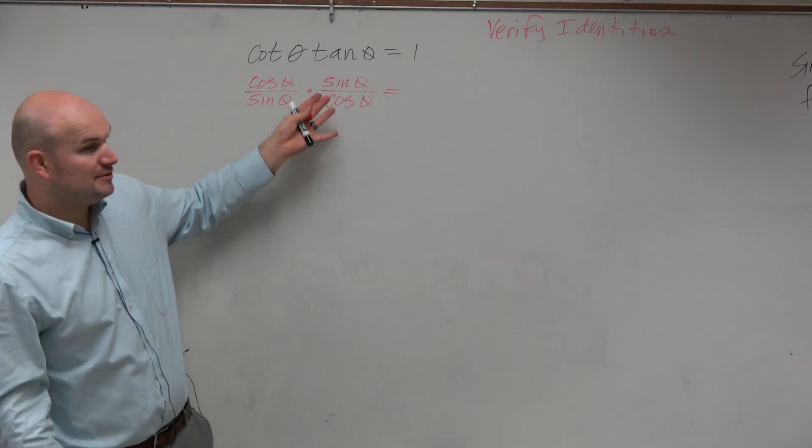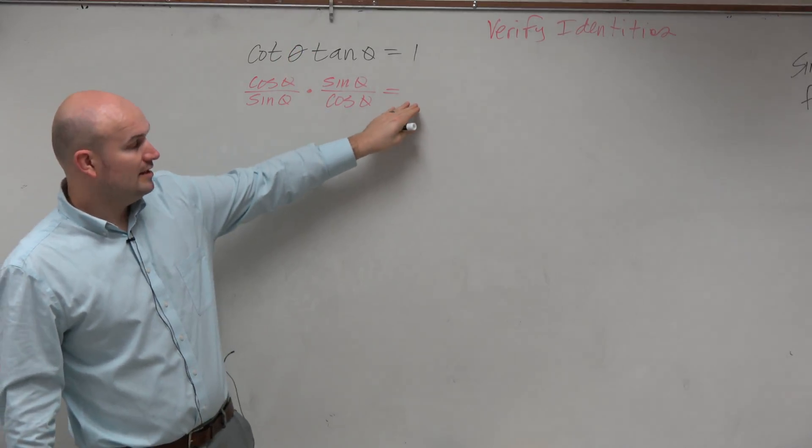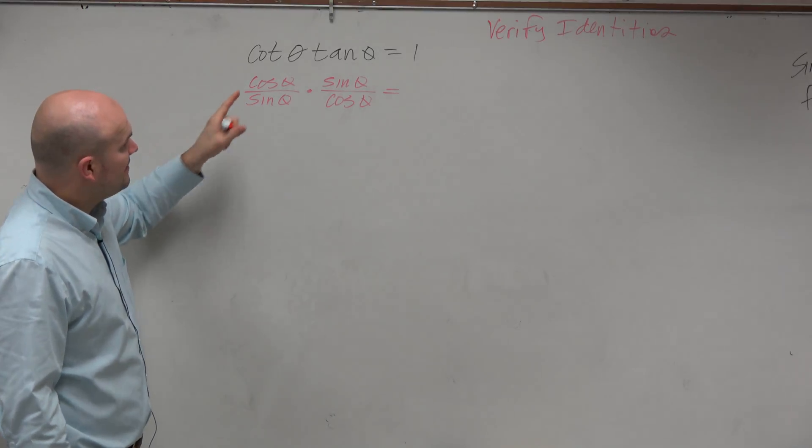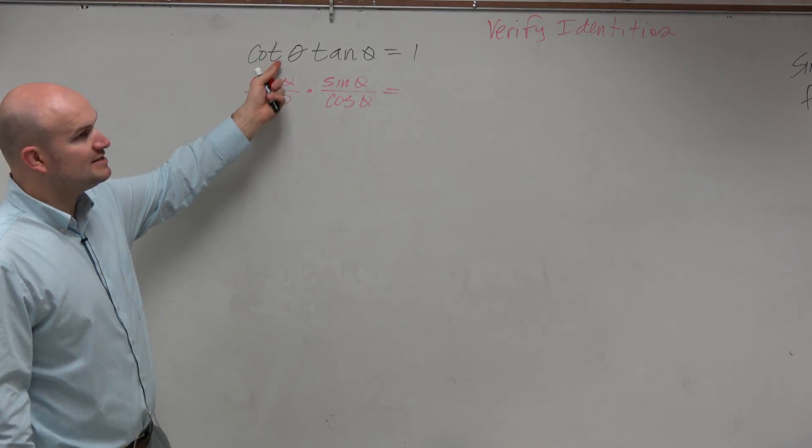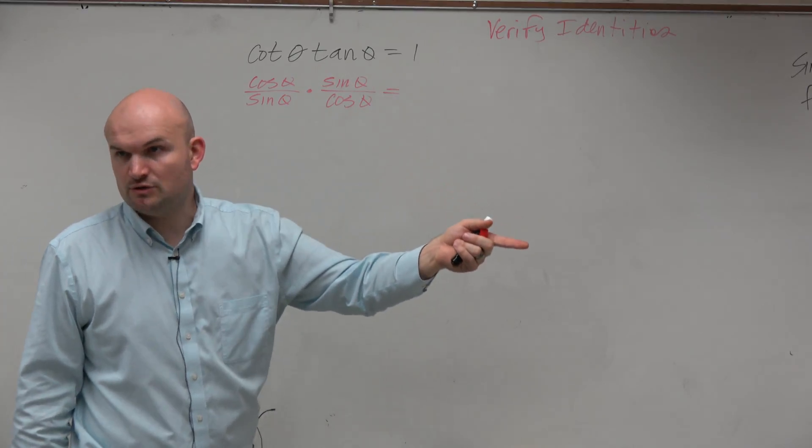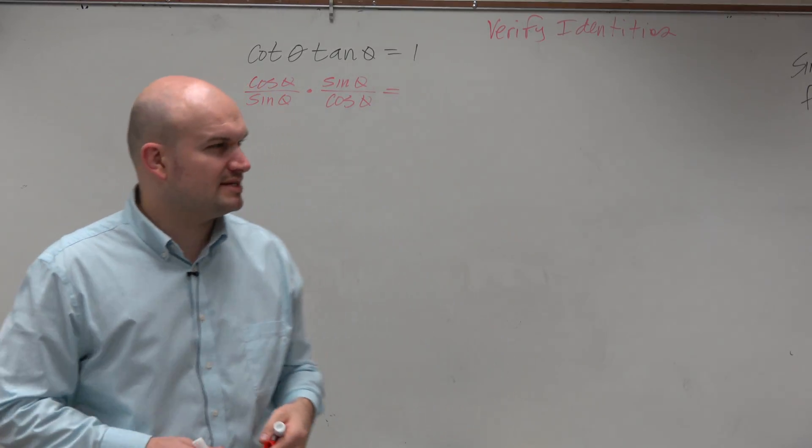Now, when you're verifying your identities, I'm okay with you working on one side and then just using the equal sign. You don't need to always rewrite what's on the other side. Then you can see, oh yeah, these are reciprocal functions of each other. Reciprocal functions of each other equal 1. But I'm showing you the work for why that's the case.